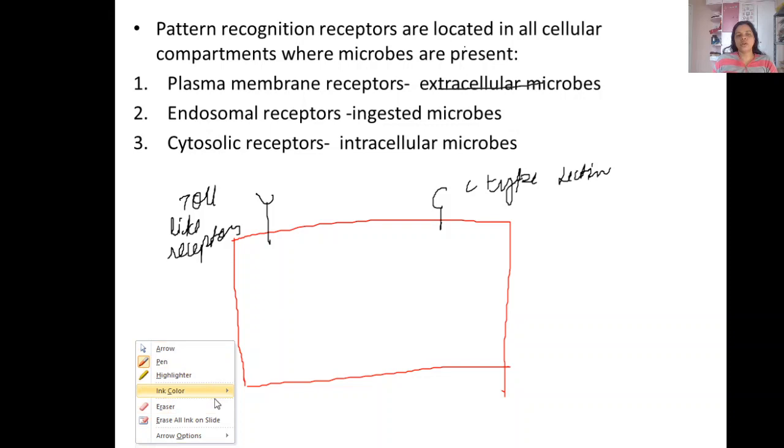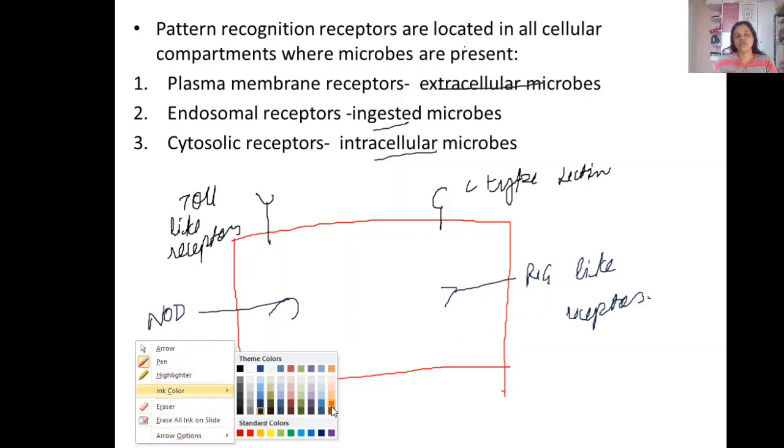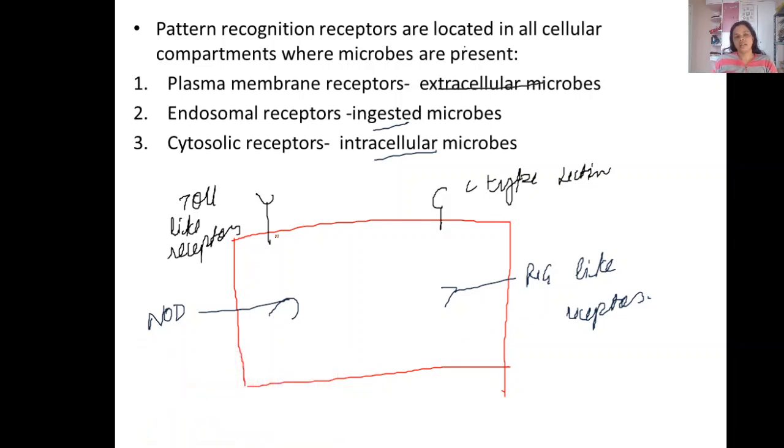In the cytoplasm also, we have different receptors which recognize the ingested and the intracellular microbes. This includes the NOD-like receptors and the RIG-like receptors. All these receptors recognize these unwanted micro molecules and help us to destroy them.